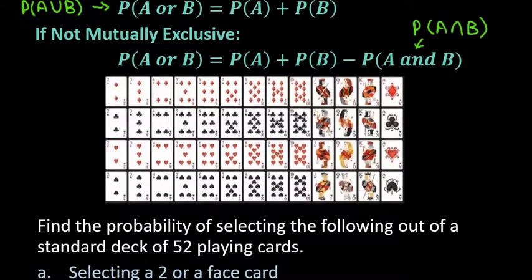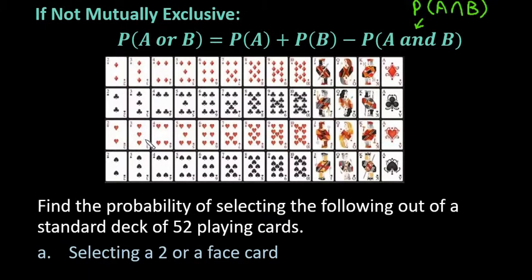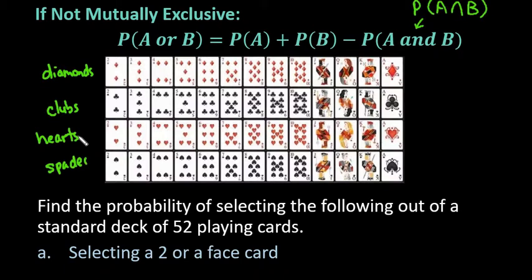In case you don't understand the distribution of playing cards, I included a visual. This is a standard deck of 52 cards. There are four suits: diamonds, clubs, hearts, and spades. Diamonds and hearts are always red cards; clubs and spades are always black cards. The face cards are the jack, queen, and king — three of each suit, giving a total of 12 face cards. They're called face cards because they have a face.